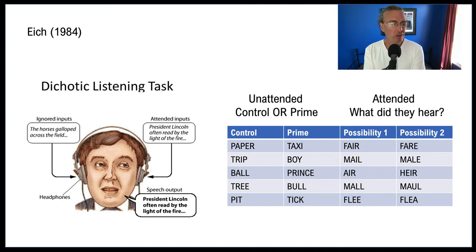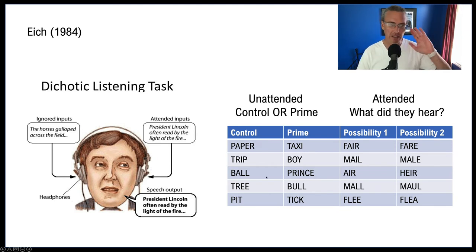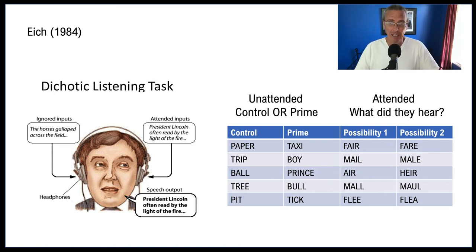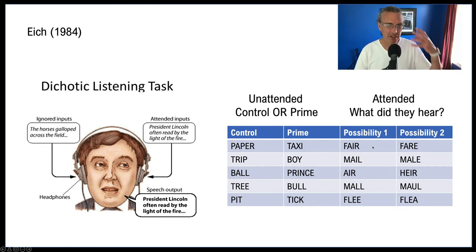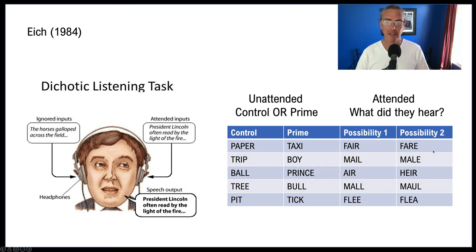At the end of the list, participants were asked to write down everything they remembered hearing. The first thing we notice is they don't remember any of the unattended words — just like Broadbent said, it's as if they never heard them. But here's where it gets interesting: when they remember a word like 'fair,' the critical question is how do they spell it — F-A-I-R or F-A-R-E? That tells us how they thought of the word.